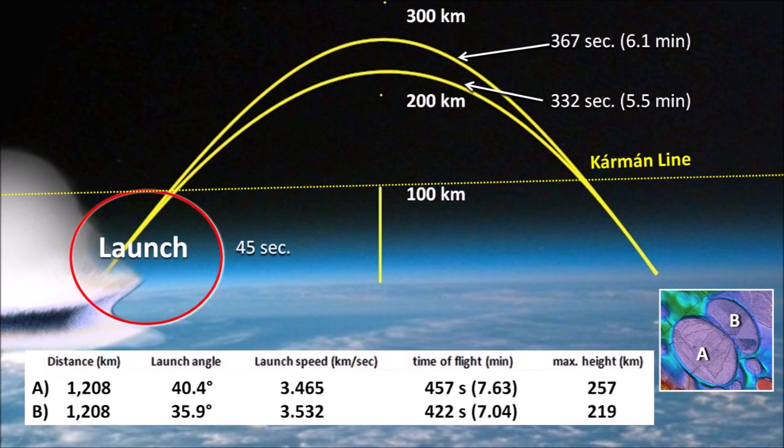The ballistic flights had three stages. The launch stage occurs immediately after the extraterrestrial impact on the ice sheet. Pieces of ice are launched in ballistic trajectories from the impact point. The question of how these pieces of ice can survive 45 seconds passing through the atmosphere during launch is provided in the 2003 publication.